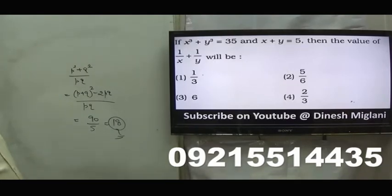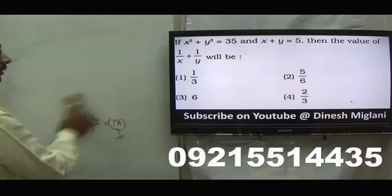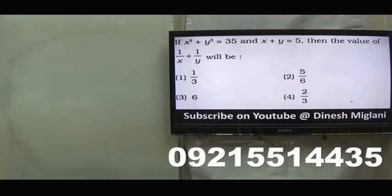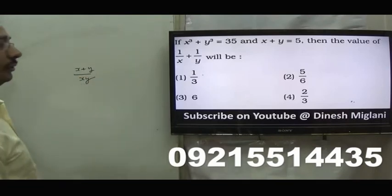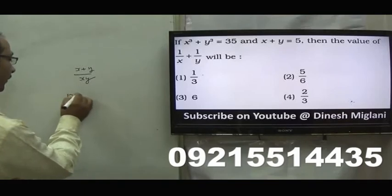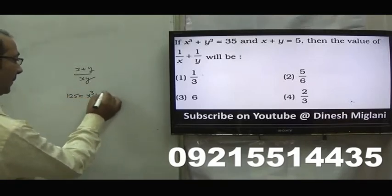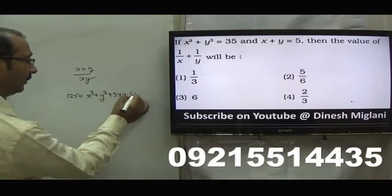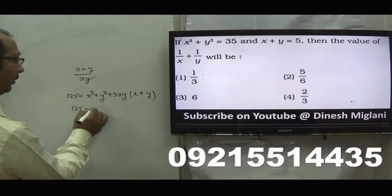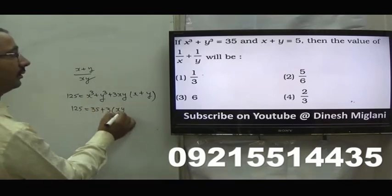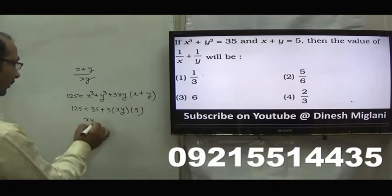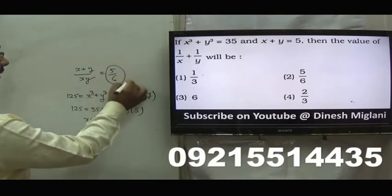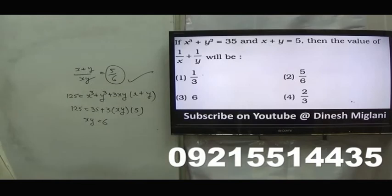x cube plus y cube equal to 35, x plus y equal to 5. We have to find 1 by x plus 1 by y, which equals x plus y divided by xy. So we only require xy. Cubing both sides: 125 equal to x cube plus y cube plus 3xy into x plus y. So 125 equal to 35 plus 3xy times 5, giving 90 equal to 15xy, so xy equal to 6. Hence 1 by x plus 1 by y equal to 5 by 6. Second is my answer, 5 by 6.